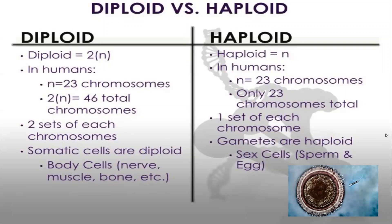To remind everyone what the difference is between diploid and haploid: diploid means 2N. In humans, that means we have 23 chromosomes, but most of our cells have pairs of those chromosomes, so we have 46 total — two sets of each. That's the case for our somatic cells: our nerves, muscles, bone, stomach cells, skin cells. Haploid, on the other hand, is just N. Our haploid cells — our sperm and eggs — only have 23 chromosomes, or one version of each chromosome. The only cells in our entire body that are haploid are our gametes.